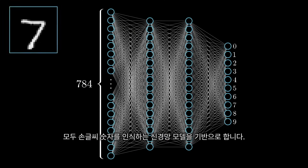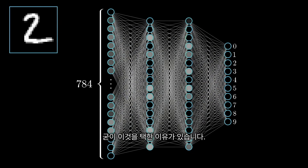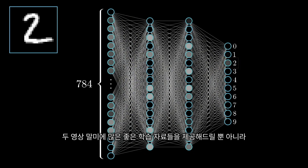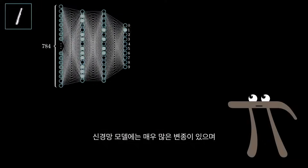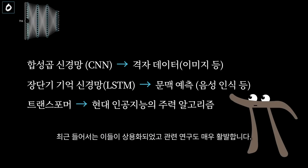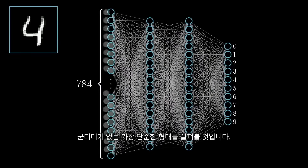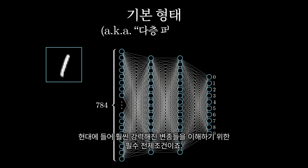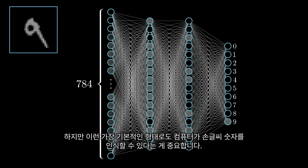What we're going to do is put together a neural network that can learn to recognize handwritten digits. This is a somewhat classic example for introducing the topic, and I'm happy to stick with the status quo here, because at the end of the two videos I want to point you to a couple good resources where you can learn more, and where you can download the code that does this and play with it on your own computer. There are many, many variants of neural networks, and in recent years there's been sort of a boom in research towards these variants, but in these two introductory videos you and I are just going to look at the simplest plain vanilla form with no added frills. This is a necessary prerequisite for understanding any of the more powerful modern variants, and it still has plenty of complexity for us to wrap our minds around. But even in this simplest form, it can learn to recognize handwritten digits, which is a pretty cool thing for a computer to be able to do.